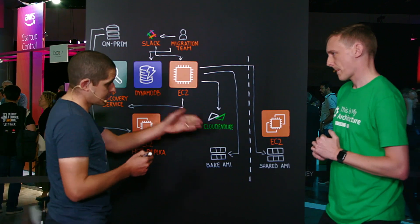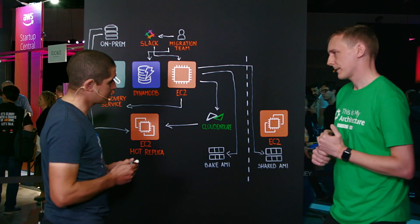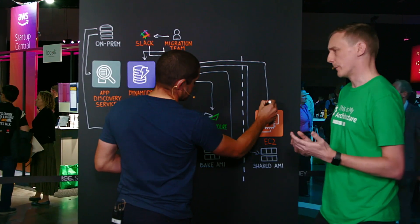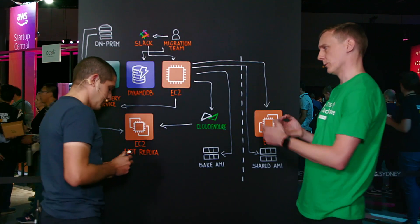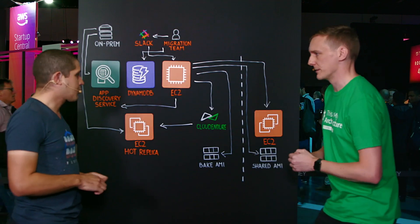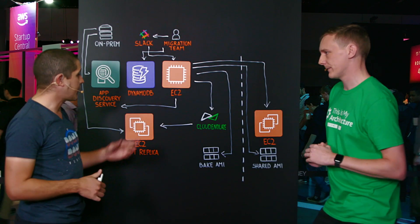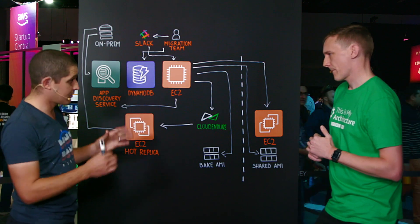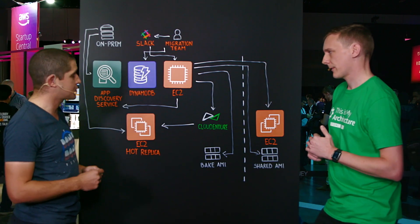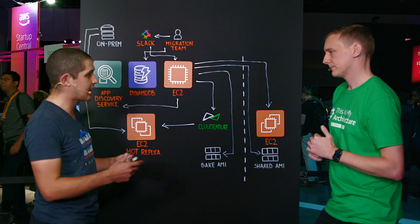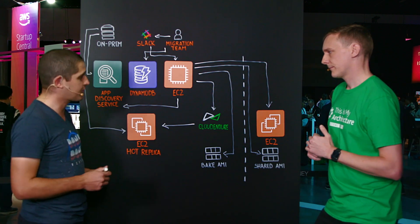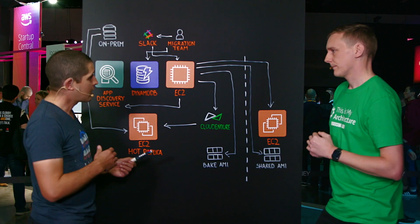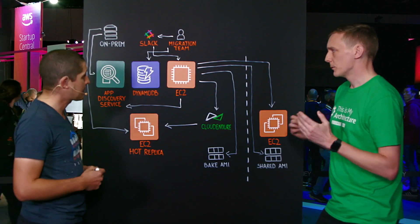Once that AMI is shared, we then start the instance. At that point we're applying all the sizing, firewall rules, and metadata that was stored in DynamoDB — the instance type, the specific IP address, and the specific tags. We're making sure that every server that goes across into AWS has a set of around 10 tags which really describe that specific server, so we understand exactly what that server is.